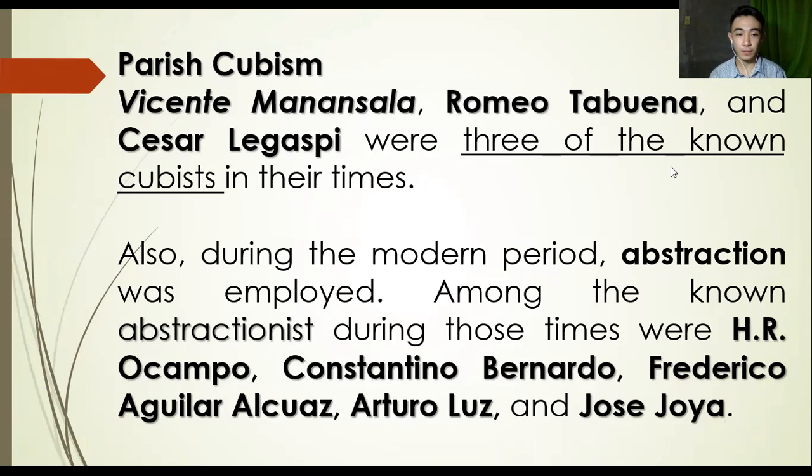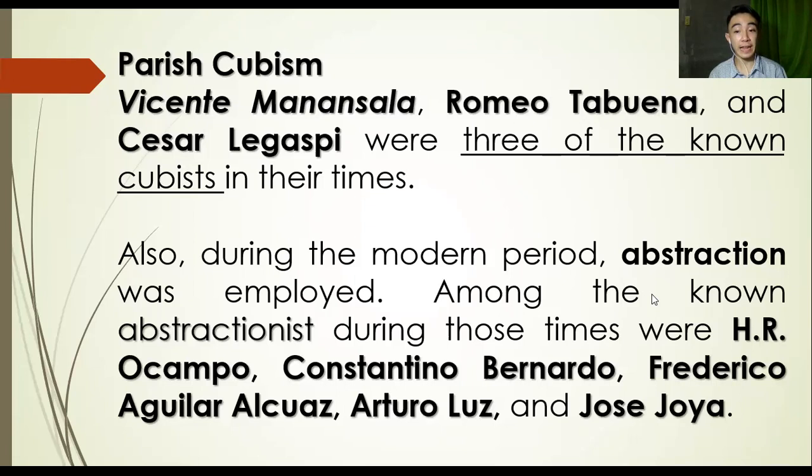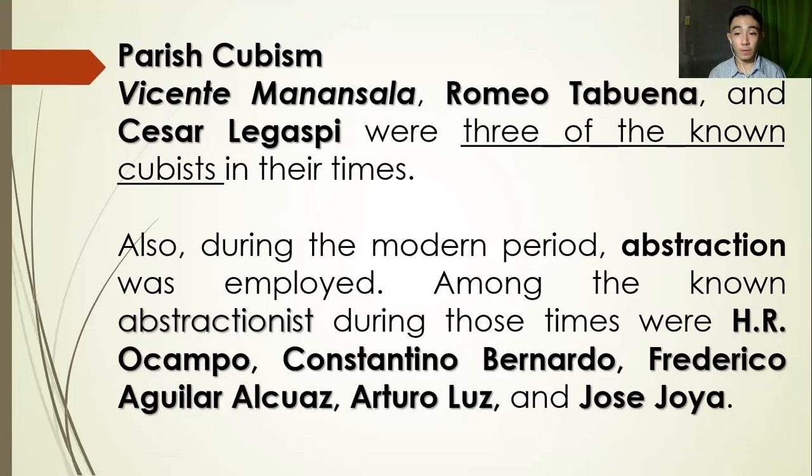During the modern period, abstraction was also employed. Abstraction art uses the visual language of shape, form, color, and line to create a composition which may exist with a degree of independence from visual references in the world. Those among the notable abstractionists during those times were H.R. Ocampo, Constantino Bernardo, Frederico Aguilar Alcuaz, Arturo Luz, and Jose Hoya.